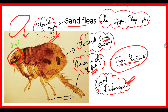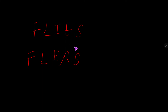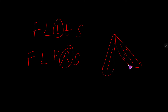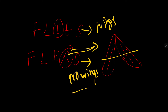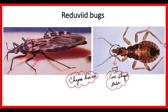An important distinction: in fleas versus flies, the letter 'i' in 'flea' is replaced by 'a' — the 'a' resembles the wings of a fly, and drawing a horizontal line through it means no wings, i.e., fleas have no wings. Next is the reduviid bug — note the letters 'V' before 'i,' meaning the nose is V-shaped or cone-shaped. This is going to cause Chagas disease.